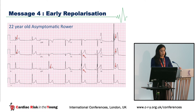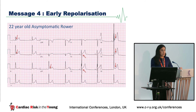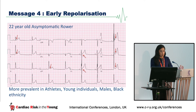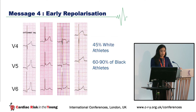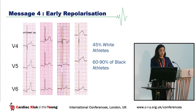Message four: this is a 22-year-old asymptomatic rower with early repolarization, defined as elevation of the QRS-ST segment junction — the J-point — of more than or equal to 0.1 millivolt, associated with late QRS slurring or notching called the J-wave, often seen in the inferior and/or lateral leads. This is more prevalent in athletes, young individuals, males, and those of black ethnicity. J-point elevation, concave ST segment, and peaked T-waves — features of early repolarization — are seen in up to 45% of white athletes and 60% to 90% of black athletes.